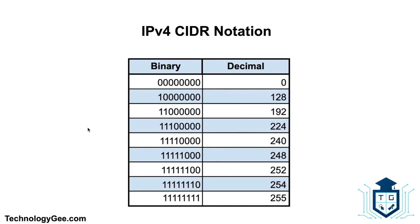What you're looking at on screen is a binary-to-decimal conversion table to help you quickly figure out the decimal equivalent for a binary value, or the binary value for a decimal equivalent. This will come in handy when doing conversions to fully understand what's going on with IPv4 and IPv6 addresses.